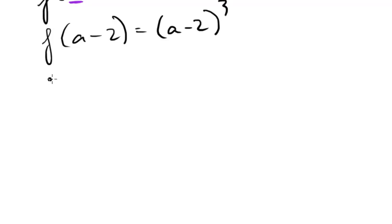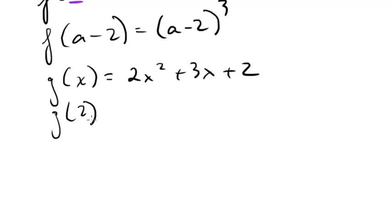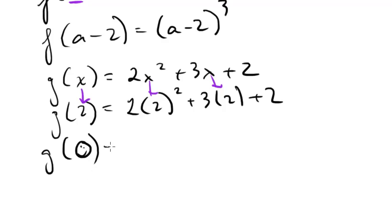Let's do another function just to make it a little clearer. Let's say g of x is equal to 2x squared plus 3x plus 2. What is g of 2? Well, that's just going to be 2 times 2 squared plus 3 times 2 plus 2. Just replacing the x with a 2. What about g of smiley face? Well, g of smiley face would just be 2 smiley face squared plus 3 smiley face plus 2. Again, wherever I see an x, I just replace it with a smiley face. That's about it.